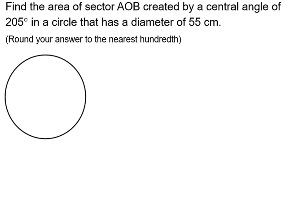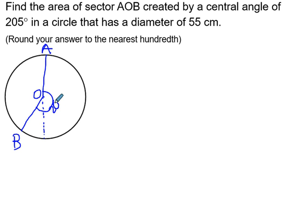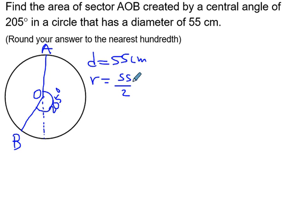Find the area of sector AOB created by a central angle of 205 degrees in a circle that has a diameter of 55 centimeters. My center is O. Since 180 degrees is a straight line, 205 is a little bit more than that, so my angle AOB is 205 degrees. The diameter is 55 centimeters. To find the radius, divide by 2, giving us a radius of 27.5 centimeters.